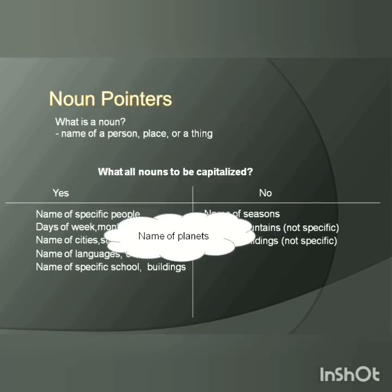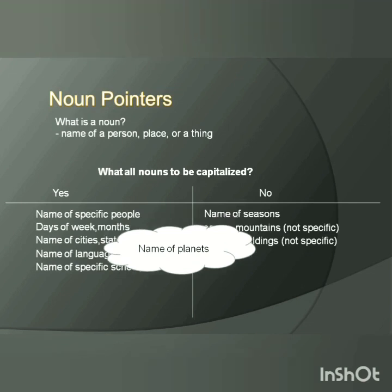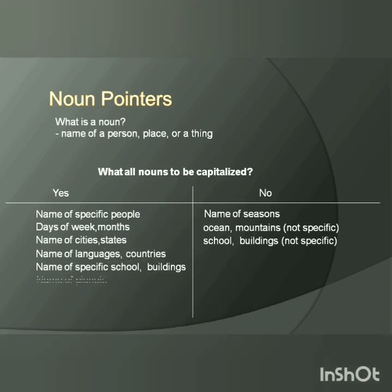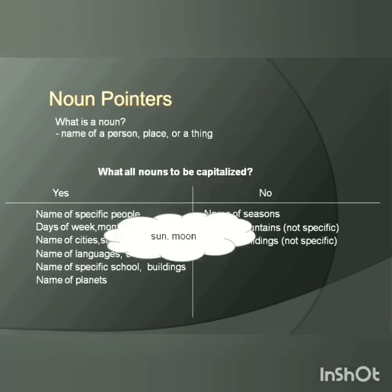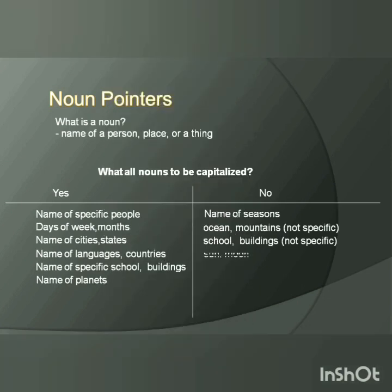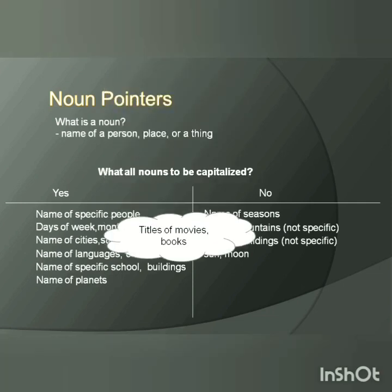Name of planets — we should capitalize. Sun and moon — we should not capitalize. Titles of movies and books — we should capitalize them. Now we are done with noun capitalization.